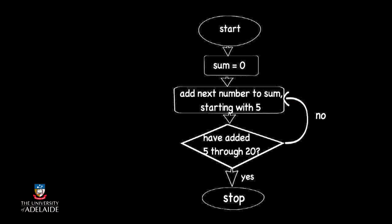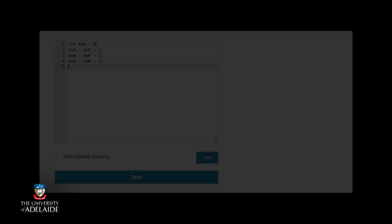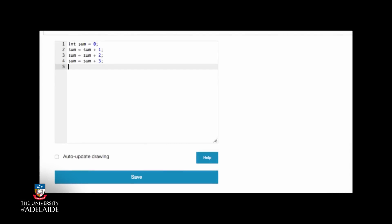So let's have a look now at how we could do this in processing. If we wanted to write this summation code, we could write it like this without using repetition. This would work, but just think about how tedious it would be if we wanted to modify our program, just as we had modified our flowchart.